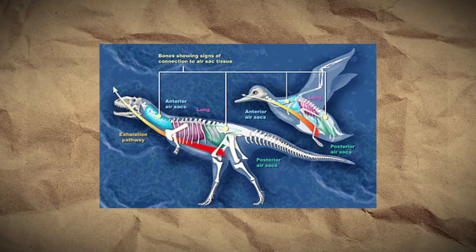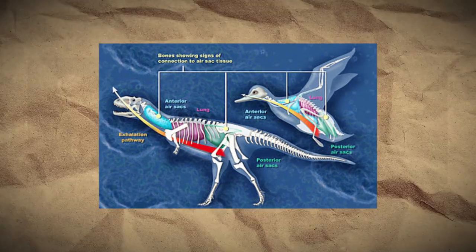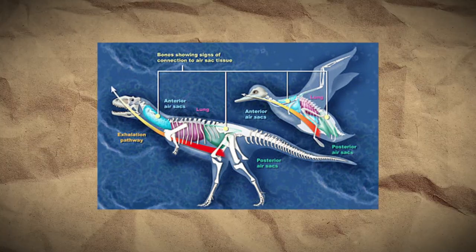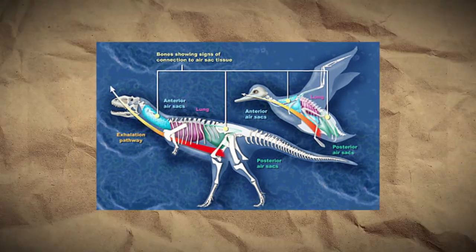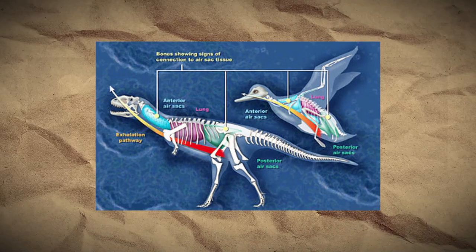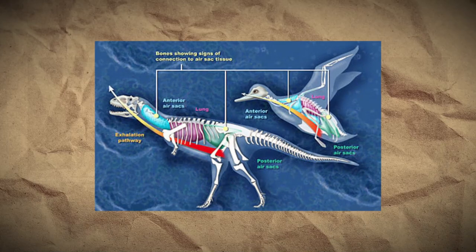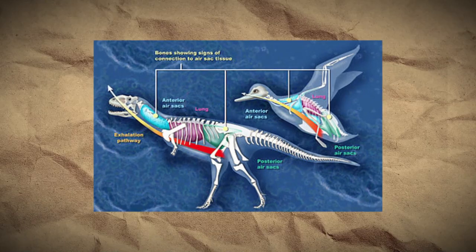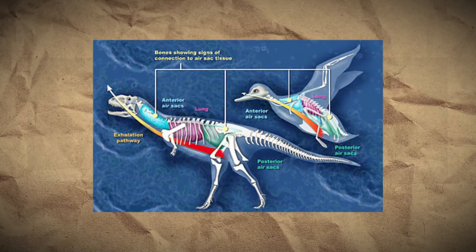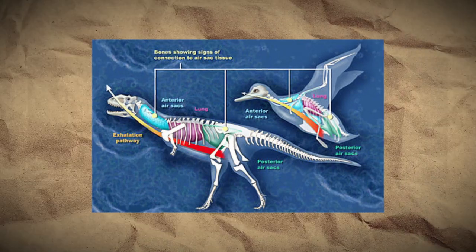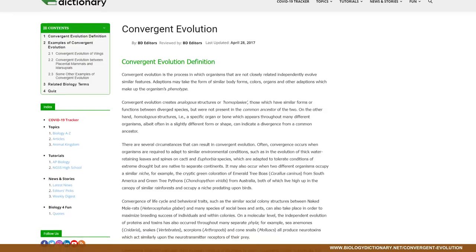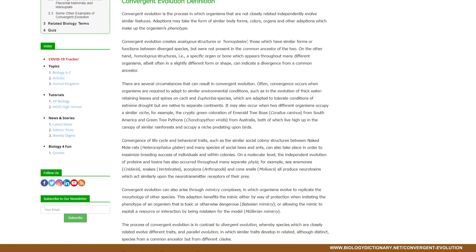Most discoveries of fossilized feathers came from theropods, the ancient ancestors of modern birds — and theropods are Saurischian, or lizard-hipped. So aren't the Ornithischians, the bird-hipped dinosaurs, the ones related to birds? Ironically, the bird-hipped dinosaurs are not closely related to birds at all. Birds are derived from the lizard-hipped Saurischian dinosaurs. The bird-hipped condition — the pubis pointing toward the back — evolved twice independently: once in the Ornithischians and once in the lineage leading to birds. This is an example of convergent evolution.